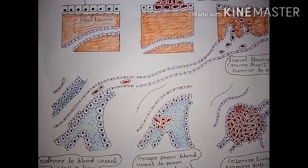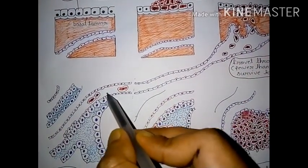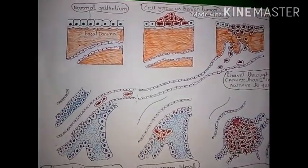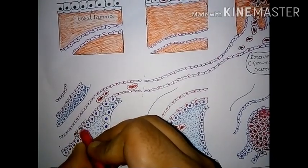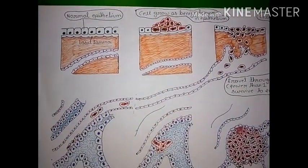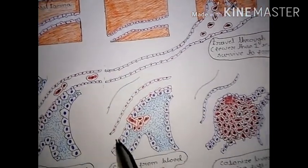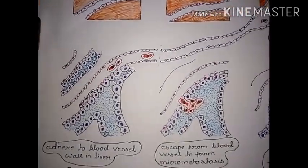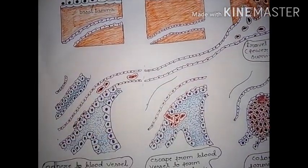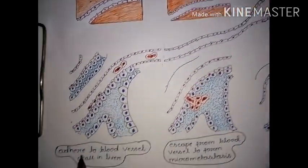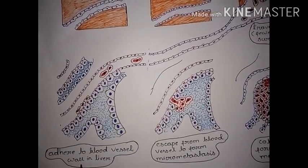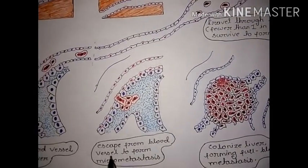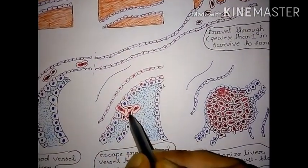Through the circulatory system, tumor cells attach to the epithelial lining of blood capillaries and ultimately invade surrounding tissue. The tumor cells adhere to blood vessels while in the liver, and after that, cancer cells readily escape from blood vessels.